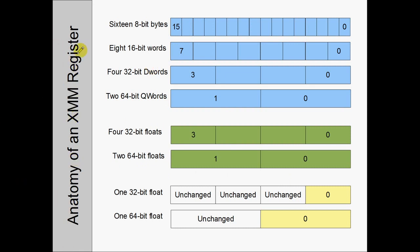The anatomy of an XMM register — these registers are incredibly flexible. You can use one of these SSE registers as 16 eight-bit bytes, drawn from zero to 15 right to left. Or as eight 16-bit words — those are all integers. Or as four 32-bit double-words. Or operating on two 64-bit quad-words.